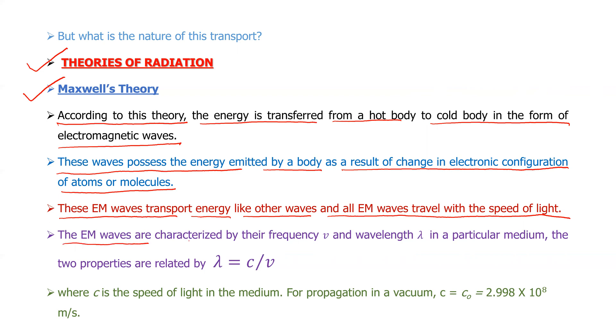The electromagnetic waves are characterized by their frequency nu and wavelength lambda in a particular medium. The two properties are related by lambda equals C by nu, where C is the velocity of propagation in vacuum or C is the speed of light in medium. For propagation in vacuum, the value of C is given as C0 which equals 2.998 times 10 raised to the power 8 meters per second. C is the speed of light, nu is the frequency of the electromagnetic waves, and lambda is the wavelength of the electromagnetic waves.